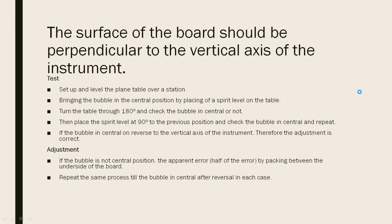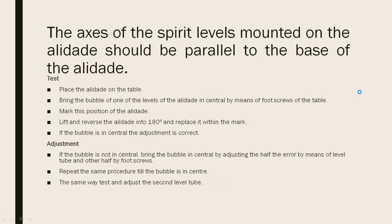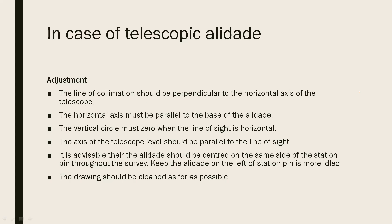The table should be oriented to 180 degrees. The fiducial edge or ruling edge of the alidade should be a straight line — we discussed the fiducial edge in the last video. For example, if you have a scale, you can do measurements of each edge and the fiducial edge to confirm it is a straight line. The axis of the split levels mounted on the alidade should be parallel to the base of the alidade, and the base of the alidade should be perpendicular to its vertical axis. In the case of telescopic alidade, we can adjust that.